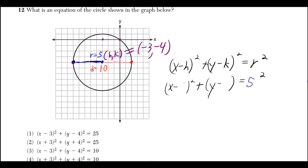So h is negative 3, and k is negative 4. And then what you can do is you can change the minus minus into pluses. And 5 squared can be written as 25, so then that gives us answer choice 2.